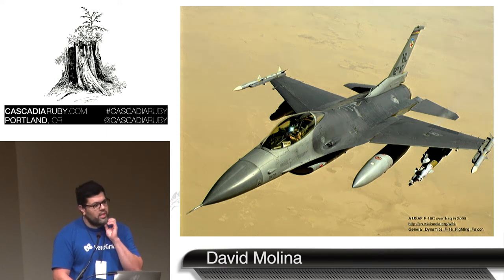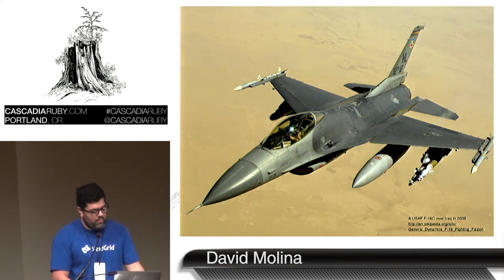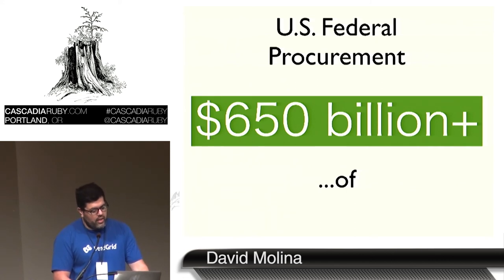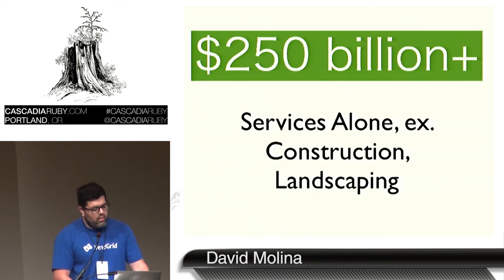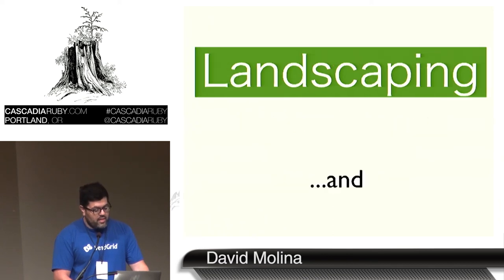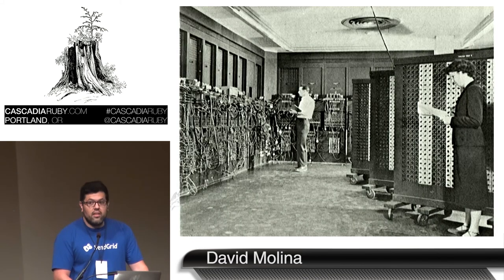Most of us think of procurement as big planes up in the air, billions of dollars — sometimes scratched after a few years because we can't afford them anymore. But really what is federal procurement? U.S. federal procurement costs about $650 billion a year and grows every year. Of that, $250 billion is services alone — things like construction, landscaping, and of course IT.